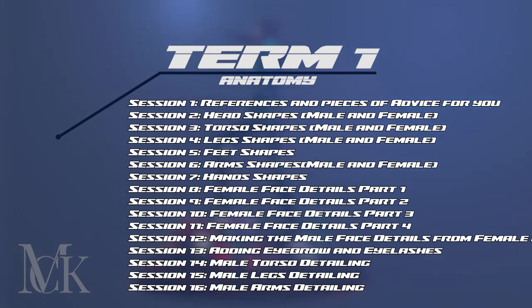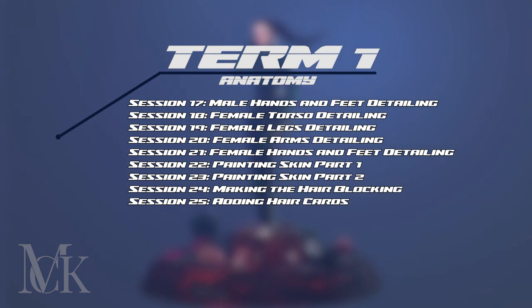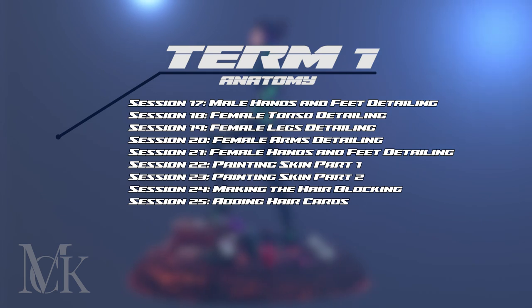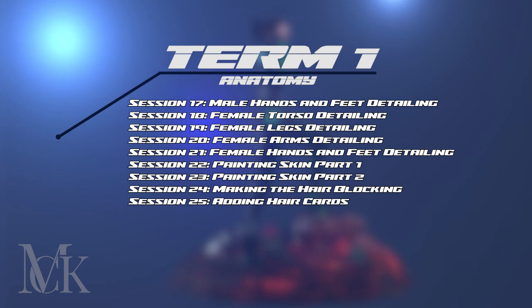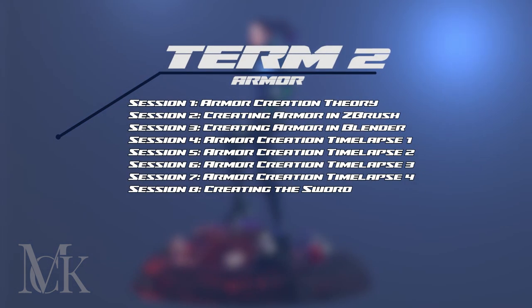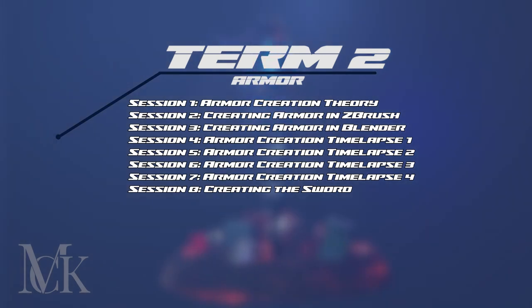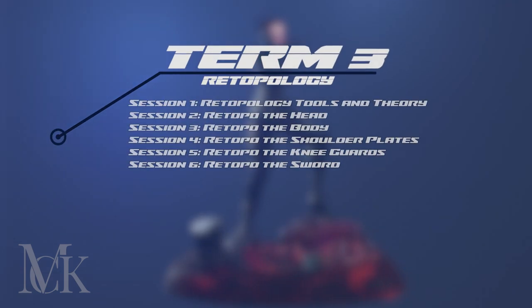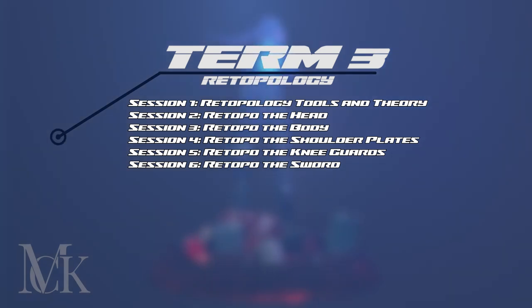Term one will be anatomy — we're going to learn anatomy for stylized or semi-realistic characters. We're not going deep into realistic anatomy; that's for a realistic course, but the basics are the same; it's just the details that make it realistic or stylized. For term two, we're going to learn how to create the armor in ZBrush and Blender, and maybe create a sword for the character. In term three, we're going to retopologize our character and weapon to make it light for the game engine.